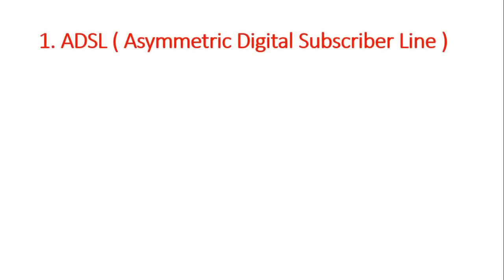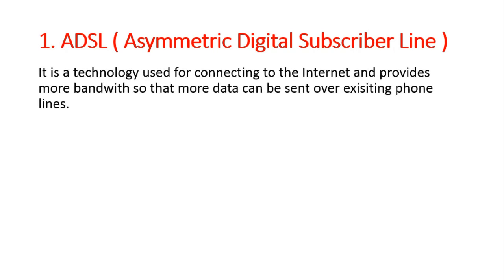First word is ADSL. The full form is Asymmetric Digital Subscriber Line. It is a technology used for connecting to the internet and provides more bandwidth, so that more data can be sent over existing phone lines. This technology helps us use the telephone line to transfer data to other people.